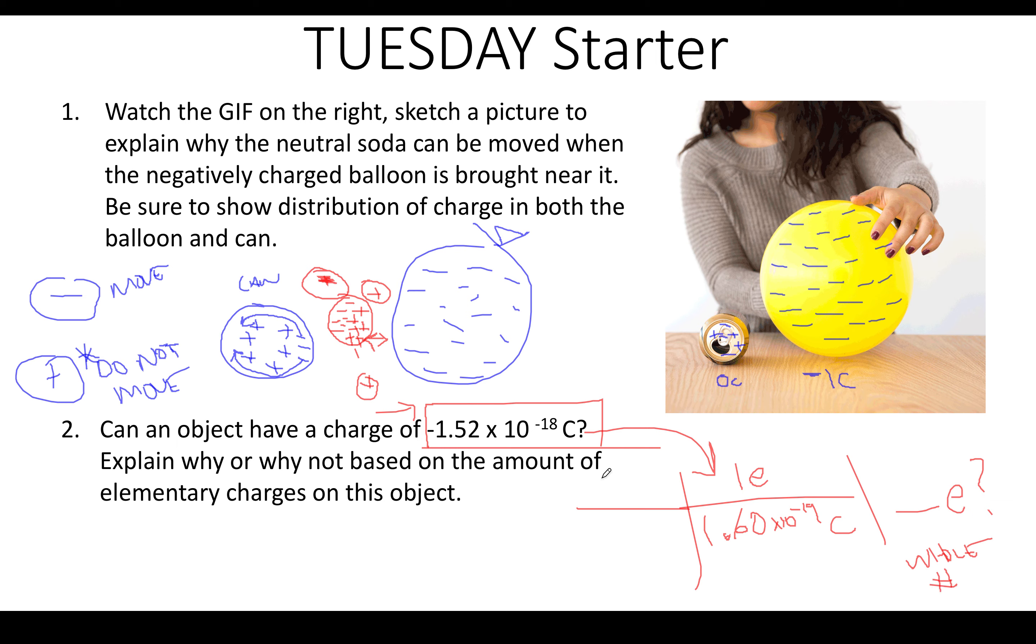So what we need to do is we need to figure out, whenever we're solving to determine if an object can actually have that charge, we need to solve how many elementary charges are in it. And it must be a whole number because we cannot have a half of an elementary charge, which would represent half of an electron. So if we plug this in, let's go 1.52 times 10 to the negative 18th. For right now, guys, I just want you to keep plugging in the negatives. What this negative means is that this object has more electrons than protons. It's excess electrons. So if we plug this in your calculator, what you end up getting, if you do it properly, is negative 9.5 elementary charges.